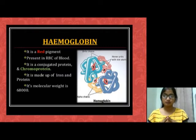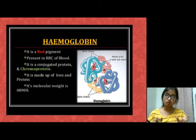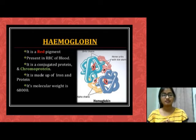Hemoglobin is made up of two words: heme and globin. Heme means iron and globin means globular protein.